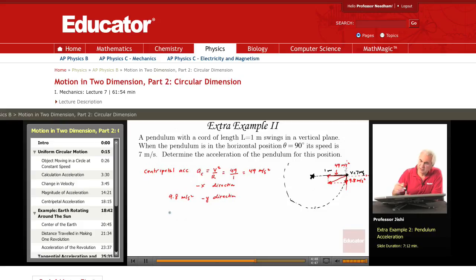I can write, setting up the X axis here and Y axis here as I indicated, the components of the vector A are: AX is minus 49 meters per second squared because it's in the minus X direction.